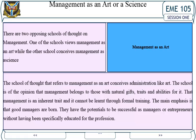Management as an art or a science. There are two opposing schools of thought on management. One school views management as an art, while the other conceives management as a science. The school that views management as an art holds that administration is like art — that management belongs to those with natural gifts, traits, and abilities. Management is an inherent trait that cannot be attained through formal training. The main emphasis is that good managers are born, with the potential to succeed without being specifically educated for the profession.